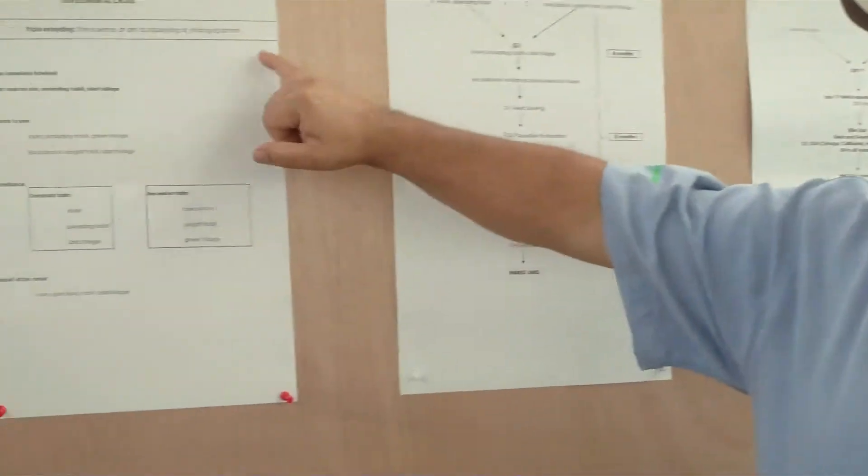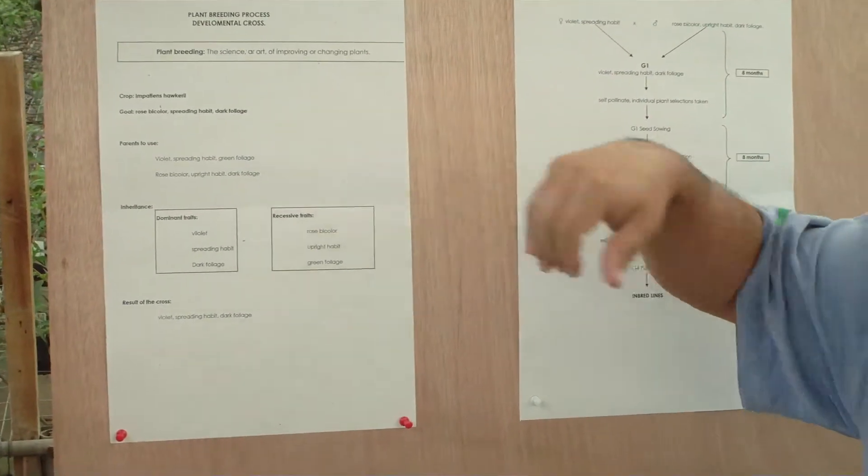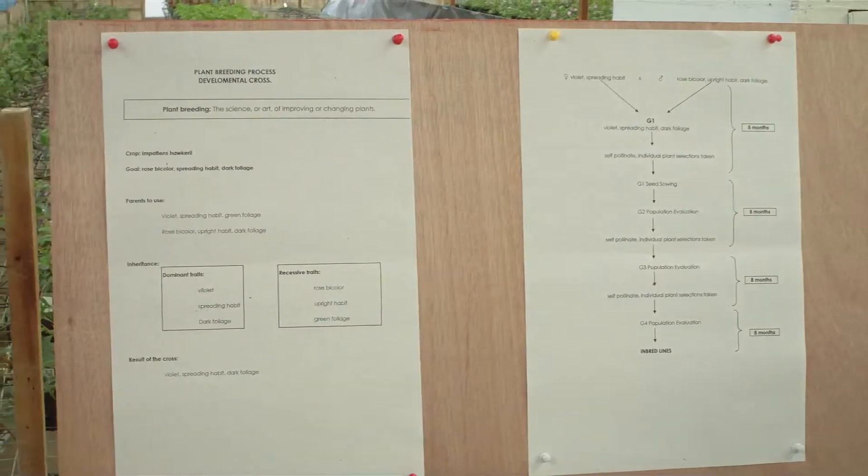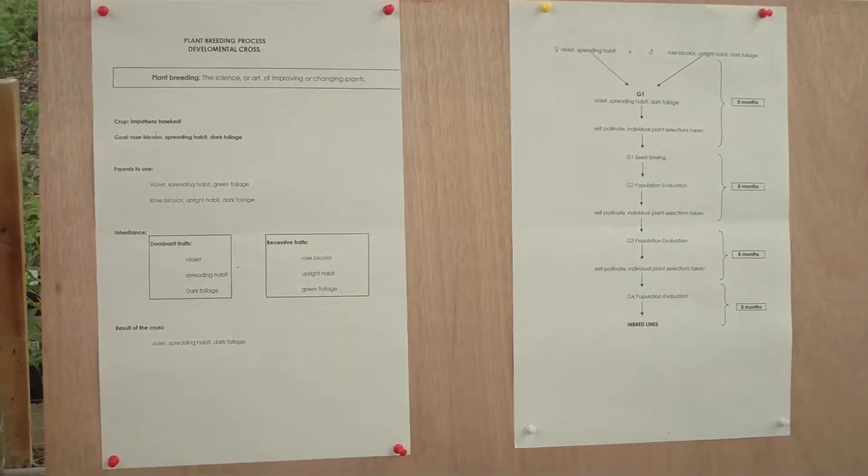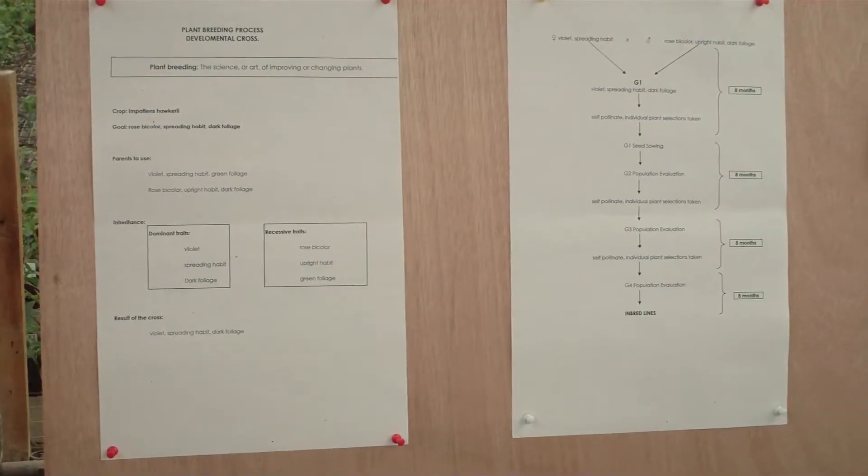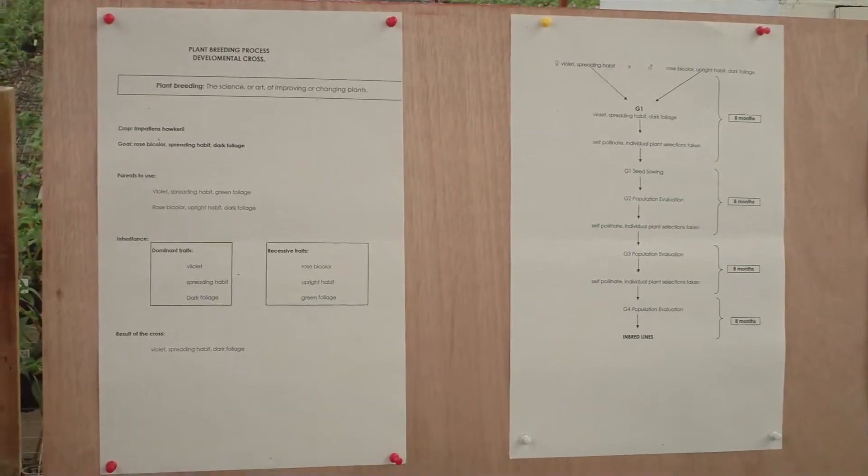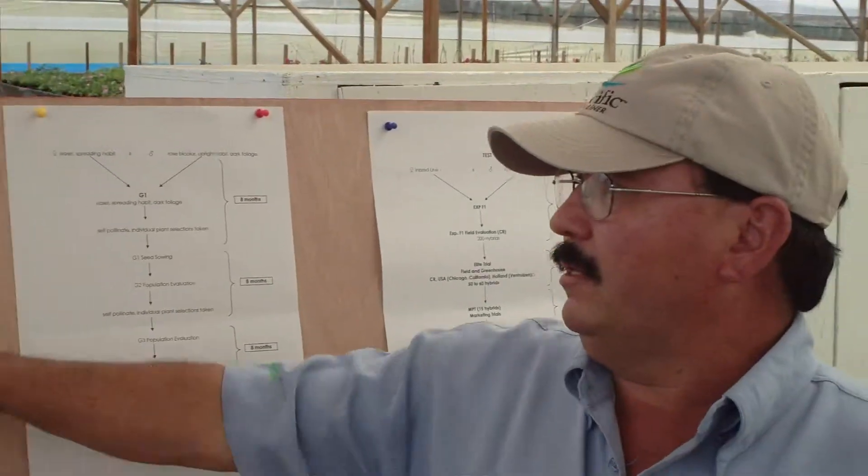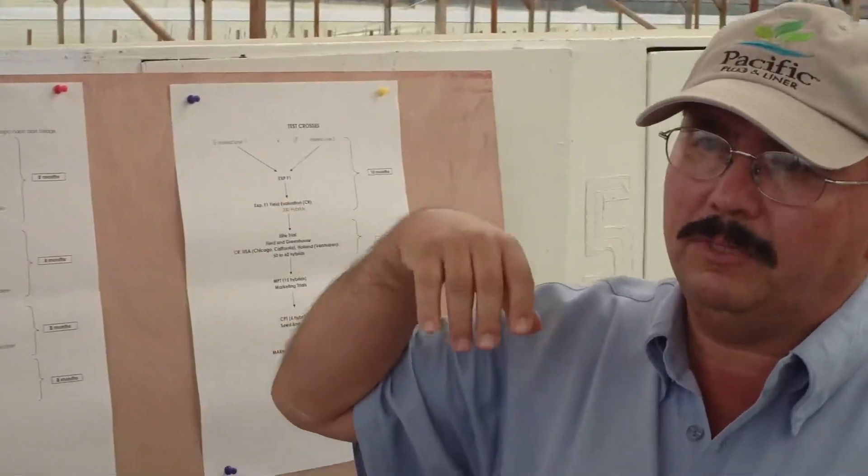Plant breeding. First of all, the definition of plant breeding. In fact, plant breeding is a science because you have to have very good knowledge about genetics. And the other is an art. Why is it an art?